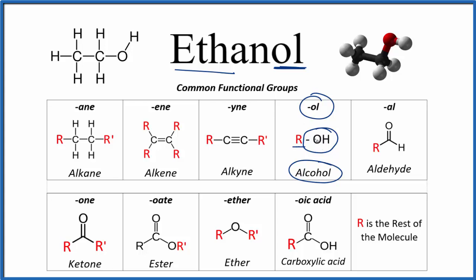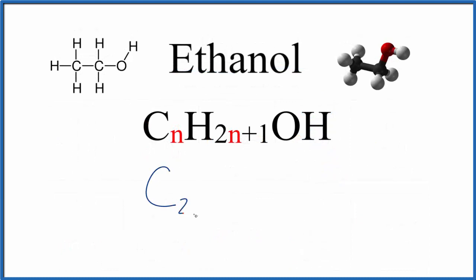There are two ways we can figure out the chemical formula for ethanol, or also called ethyl alcohol. The first way is using this formula here. So we'd have C2H, 2 times the N, that's this N here, the number of carbons, 2 times 2, plus 1. And then we tack that OH group on the end.